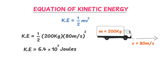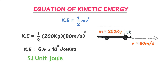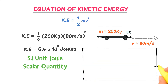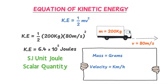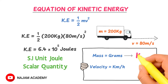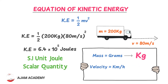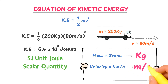The kinetic energy of this truck is 6.4 × 10⁵ joules. Remember that the SI unit of kinetic energy is the joule, and kinetic energy is a scalar quantity. Also, if mass is given in grams and velocity in kilometers per hour, always convert grams to kilograms and kilometers per hour to meters per second, as many students make this mistake.